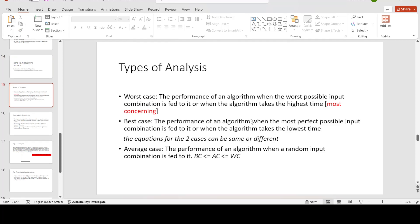We have seen three types of analysis: worst case, best case, and average case. Worst case is when the algorithm is given the worst possible input. Best case is where the algorithm is given the best possible combination. And then we have the average case where the algorithm is given a random set of input.